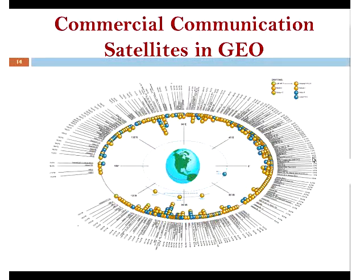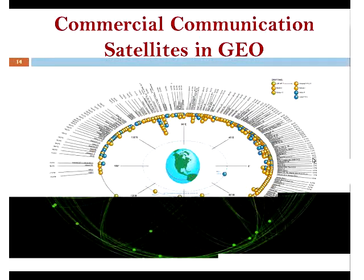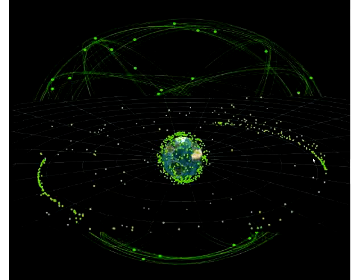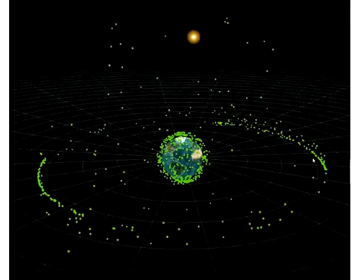This image gives an idea of how many satellites are located around the Earth in various orbital positions.